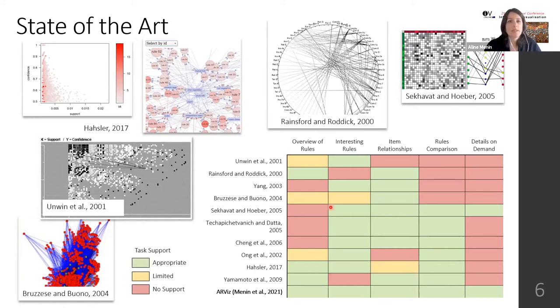Further, we identified a set of tasks normally performed when exploring association rules, such as providing an overview of rules, identifying interesting rules and the relationship between items, comparing the rules, and providing details on demand, such as the source of the data. We observed that none of the previous tools support all of these tasks, so we proposed RVIT.